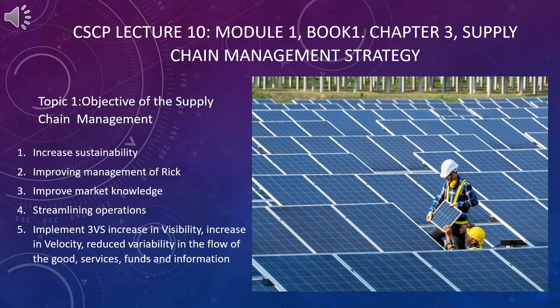Our first topic is the objectives of supply chain management. There are five objectives: increase sustainability, improve management of risk, improve market knowledge, streamline operations implementing the three V's — increase visibility, increase velocity, reduce variability — in the flow of goods, services, funds, and information.